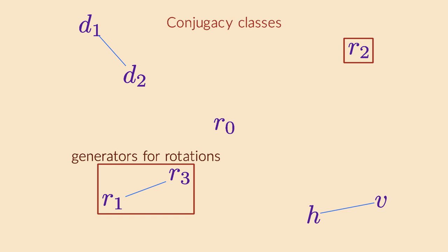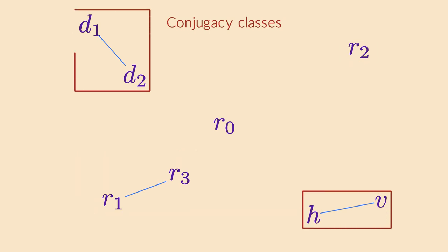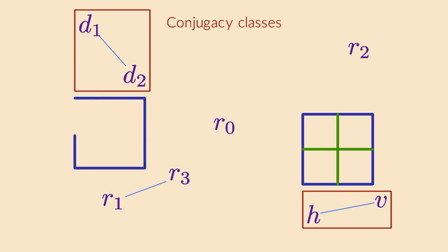It also captures the difference between two different kinds of reflections. H and v are similar to each other because they both reflect over an axis that runs through opposite edges of the square. The diagonal reflections, on the other hand, have axes that run through opposite corner points instead. This makes both kinds of reflections sufficiently different that they end up in separate classes. Or, to put it in other words, no matter which perspective you choose, you will never be able to see a diagonal flip as a horizontal or vertical one.